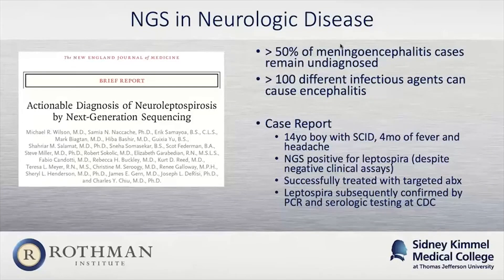This is a case report in the New England Journal of Medicine looking at meningoencephalitis, many cases of which go undiagnosed. It's a particular problem given the high number of infectious agents that can cause this disease. The case involved a 14-year-old boy who had fever and headache for four months. Multiple workups were negative, but NGS identified Leptospira. The patient was successfully treated, and the diagnosis was later confirmed by the CDC through PCR and serologic testing.